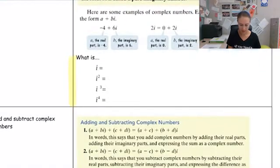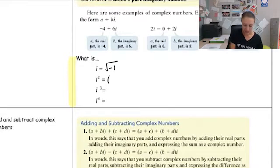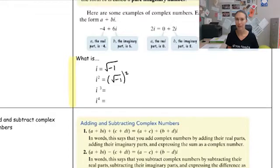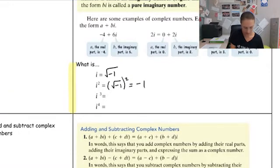Just to wrap up what i is as a definition: it's an imaginary number. i itself is the square root of negative one. If I take the square root of negative one and I square it — so for i squared — the square and the square root cancel each other out, so i squared ends up as just negative one.